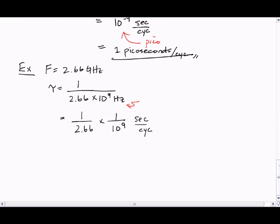1 over 2.66, if you use your calculator, is approximately 0.375, times 10 to the minus 9.